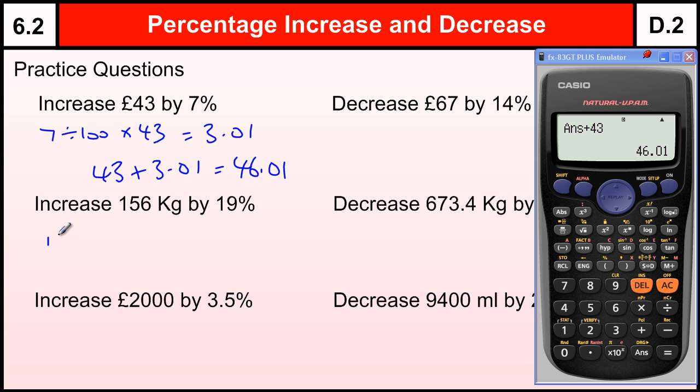156 kg by 19%, so 19 divided by 100 times by 156. Gives us the increase, which is 29.64 kilograms. And if we add those two together, 156 plus 29.64 is 185.64 kilograms.